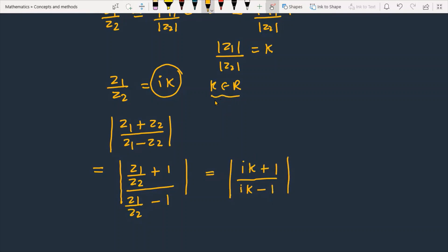If we take the modulus, the numerator becomes modulus of 1 plus k square, and the denominator also becomes modulus of 1 plus k square. The terms cancel, and the result equals 1.